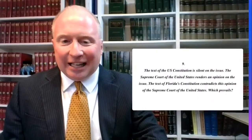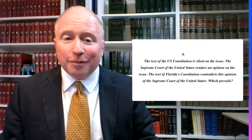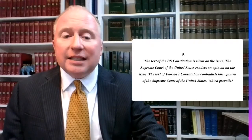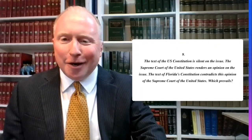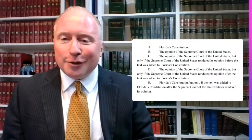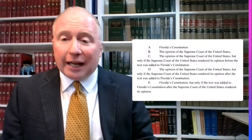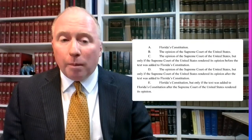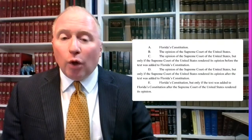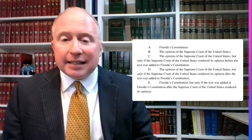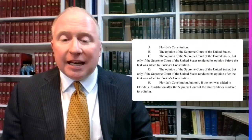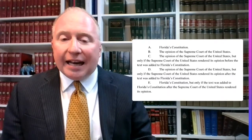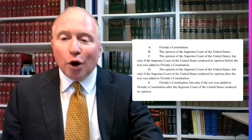Turning now to question nine. The text of the U.S. Constitution is silent on the issue. The Supreme Court of the United States renders an opinion on the issue. The text of Florida's Constitution contradicts this opinion of the Supreme Court of the United States. Which prevails? Choice A: Florida's Constitution. Choice B: The opinion of the Supreme Court of the United States. Choice C: The opinion of the Supreme Court of the United States, but only if it rendered its opinion before the text was added to Florida's Constitution. Choice D: The opinion of the Supreme Court of the United States, but only if it rendered its opinion after the text was added to Florida's Constitution. Choice E: Florida's Constitution, but only if the text was added after the Supreme Court rendered its opinion.